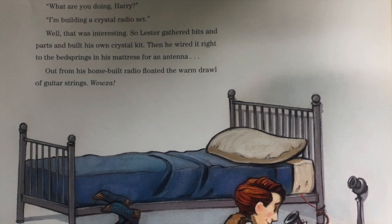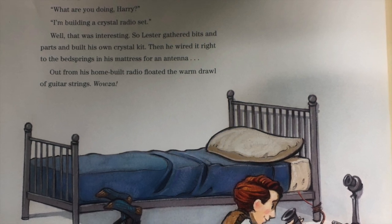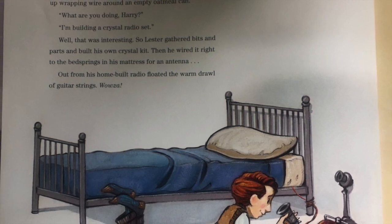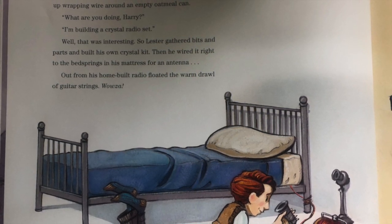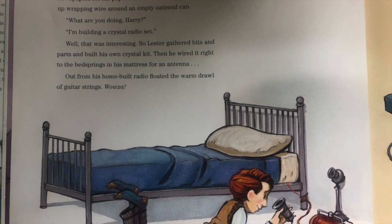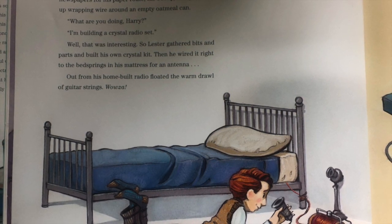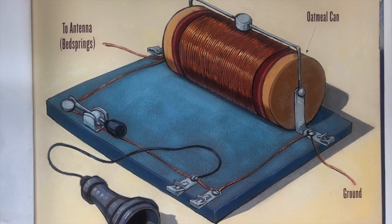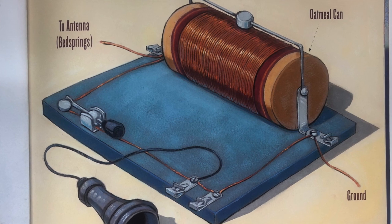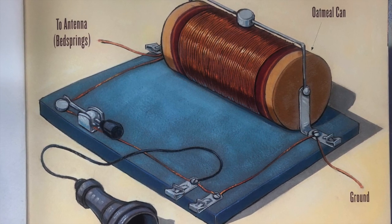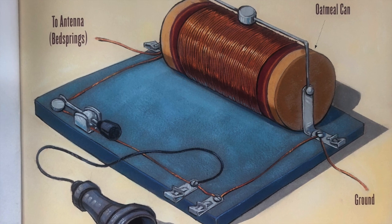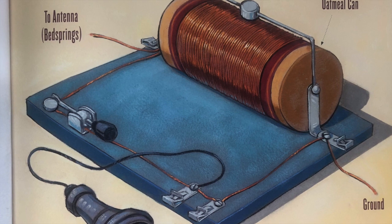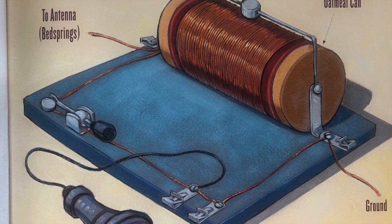He did a lot of thinking. One day, while he was stuffing newspapers for his paper route, his buddy Harry showed up wrapping wire around an empty oatmeal can. "What are you doing, Harry?" "I'm building a crystal radio set." Well, that was interesting. So Lester gathered bits and parts and built his own crystal kit. Then he wired it right to the bed springs in his mattress for an antenna. Out of his home-built radio floated the warm drawl of guitar strings. Wowza!